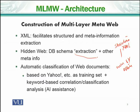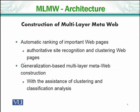We want to do automatic classification of web documents, using Yahoo as a training set, with keyword-based correlation, classification, and AI. To create a multi-layered web, we need XML, database schema, and a classification mechanism for web documents — all combined to move into a multi-layered web.